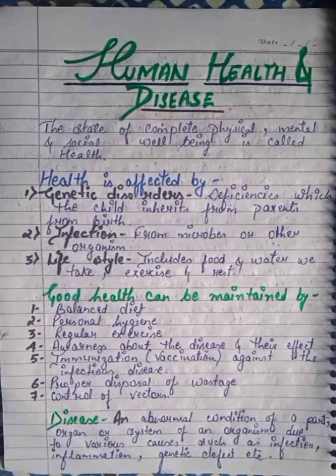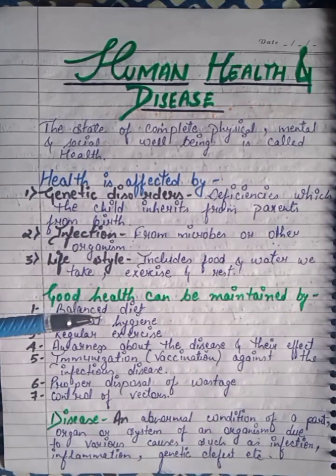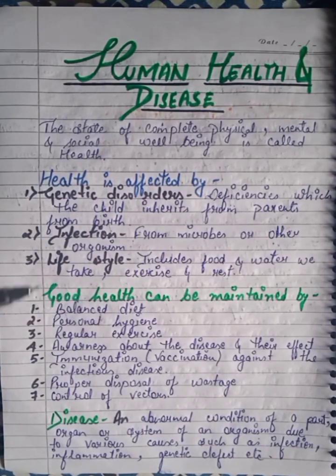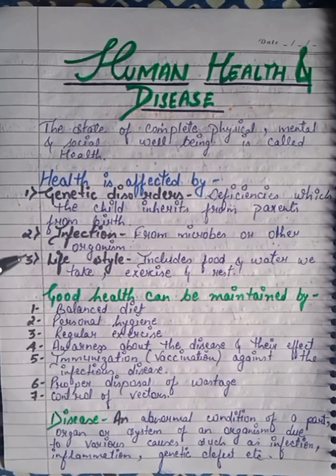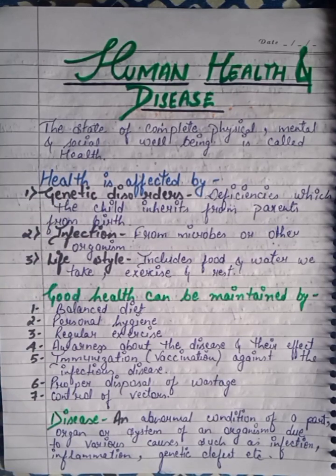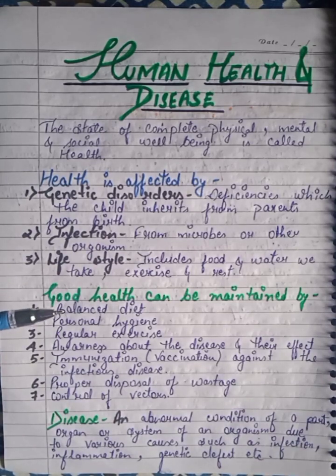The first factor affecting health is genetic disorder — if a child has a disease inherited from parents, that will affect the child's health. The second is infection from microbes and other organisms; if a child has an infection, that will also affect the child's health.